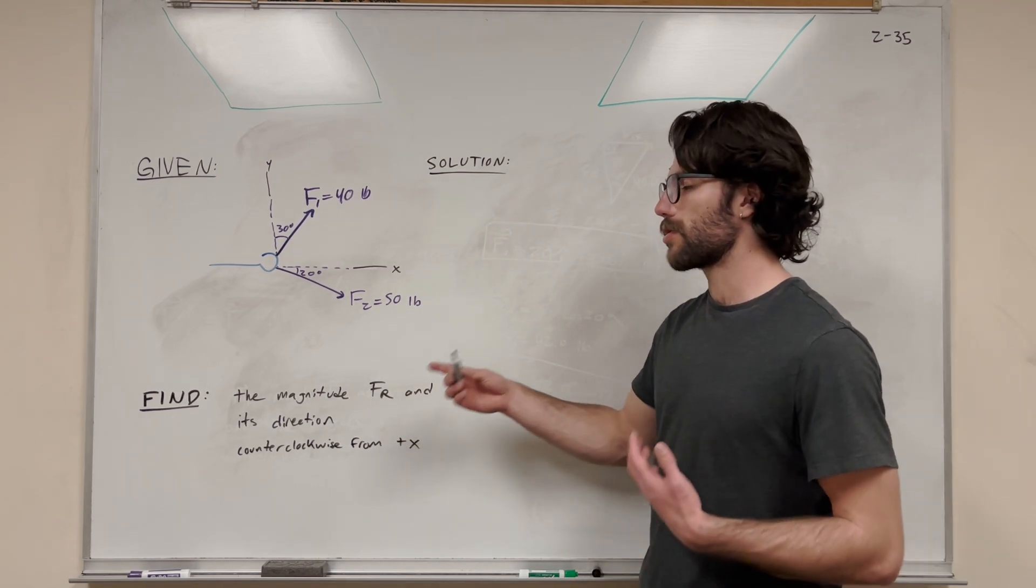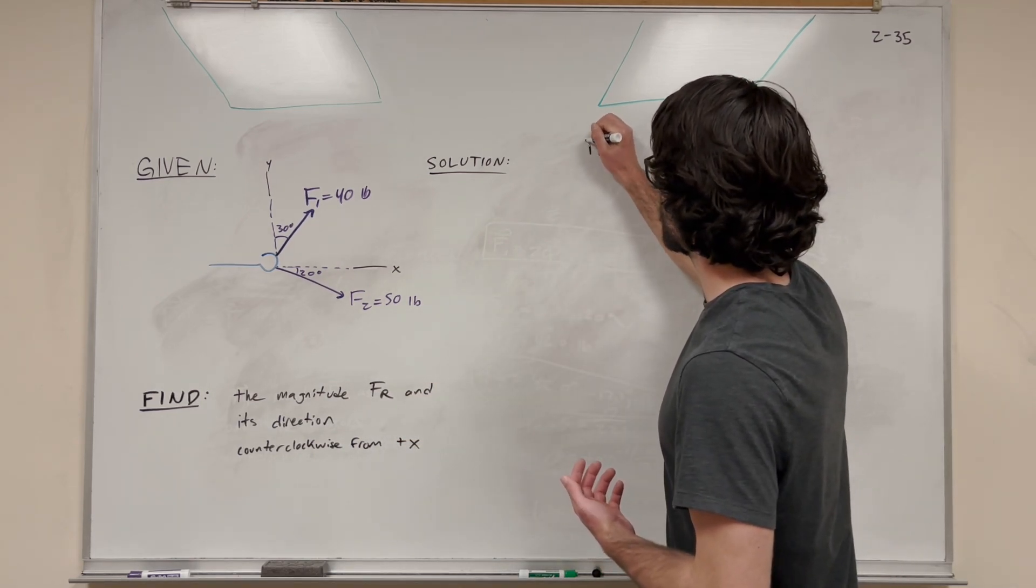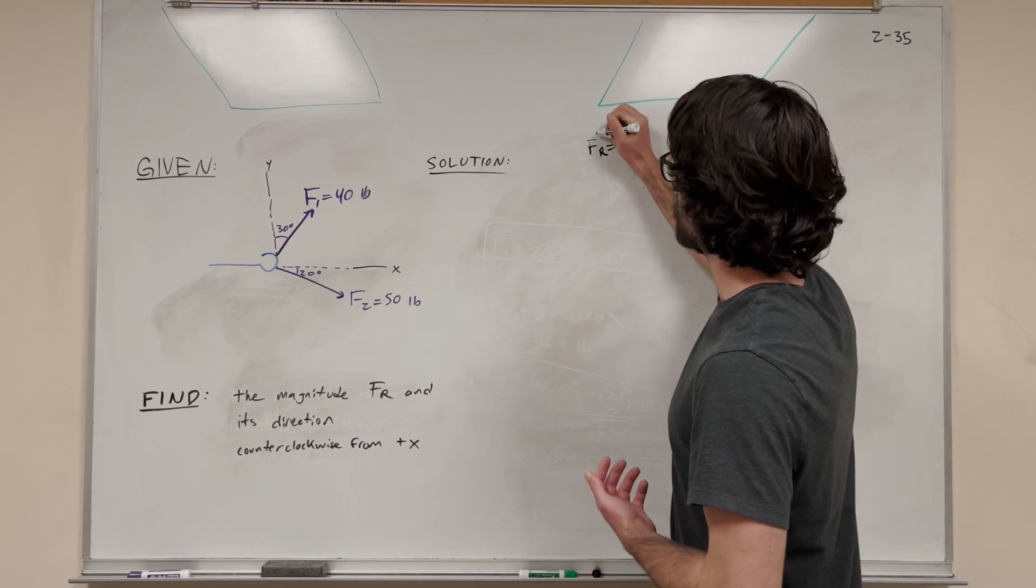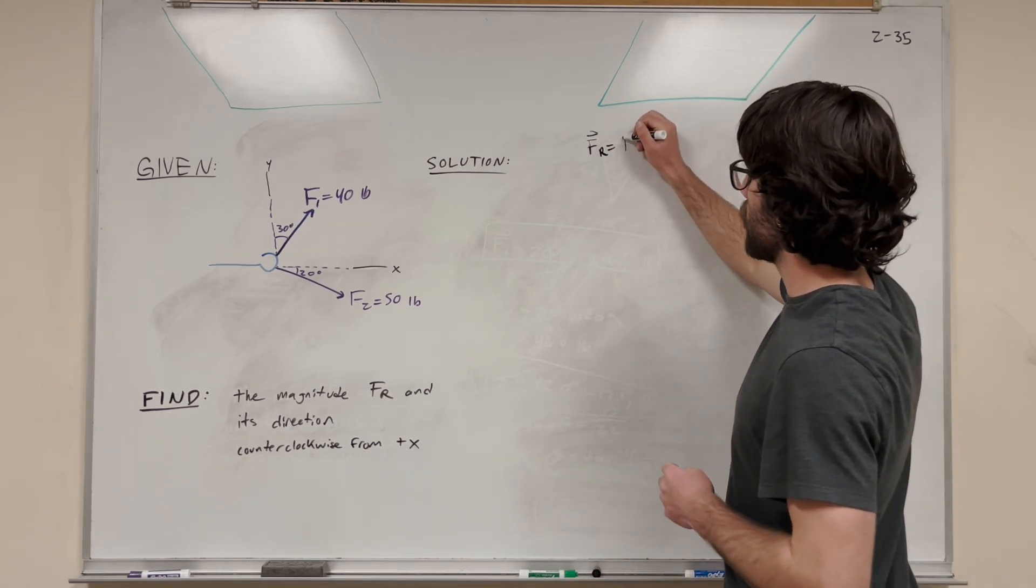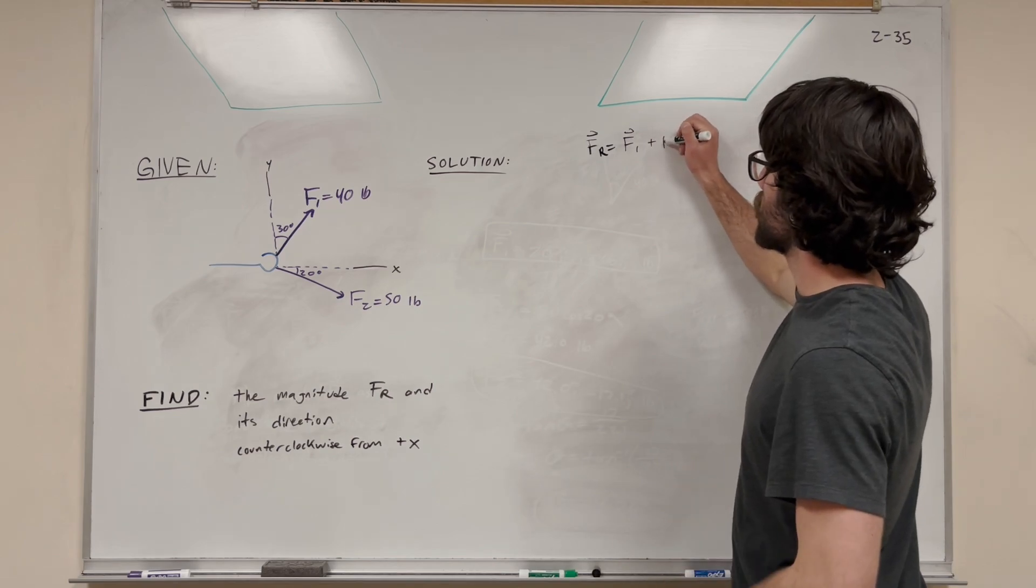If we're trying to find the magnitude force resultant, what is that? Well, the resultant force is equal to the sum of the vectors that is being added to it. So of course, this is going to be force 1 plus force 2.